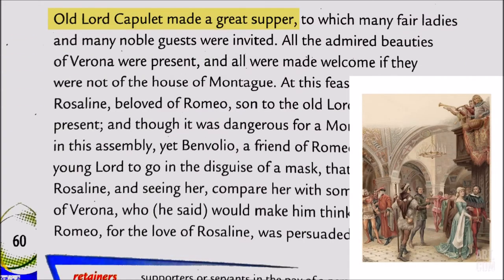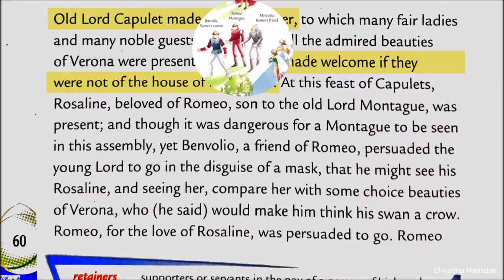Old Lord Capulet arranged a great supper. Many fine ladies and noble guests were invited to the feast — it was a grand feast of grand people. All were welcomed except the Montagues. In this feast, Rosalind, the beloved of Romeo, had also arrived. So Benvolio persuaded Romeo to go and see his beloved at the grand feast.